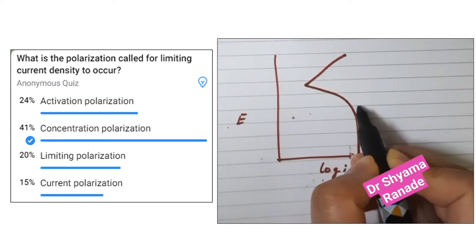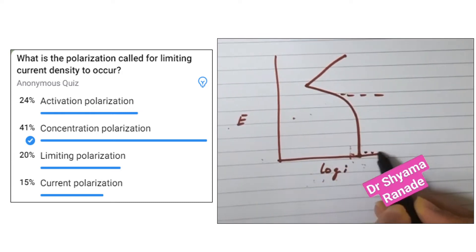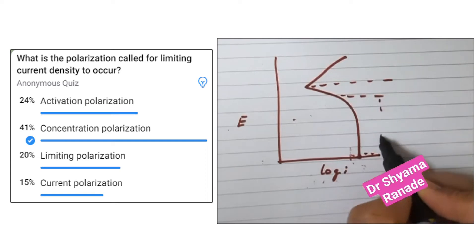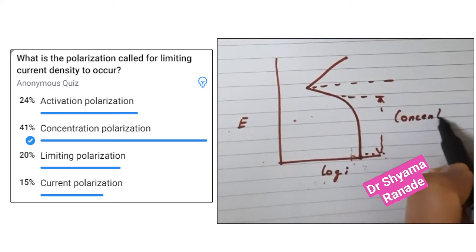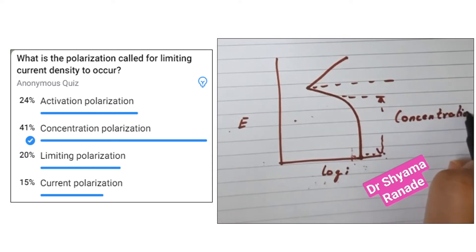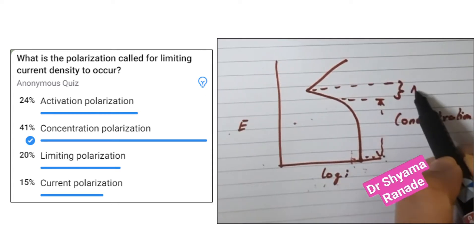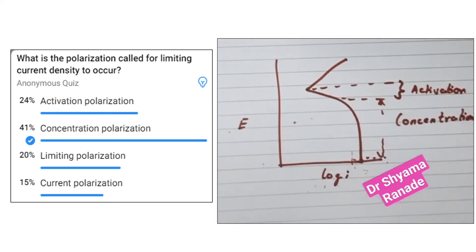This polarization is one of the two types of polarization and it happens in this region and is called the concentration polarization. The polarization in this region is called the activation polarization.